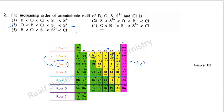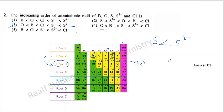Don't forget that when you have an anion, the ionic radius is larger than the neutral atom. For example, the ionic radius of S²⁻ is greater than that of sulfur.